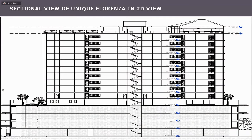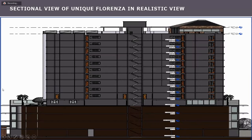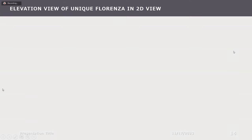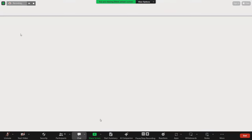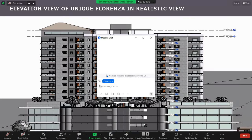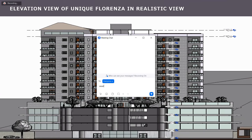Coming to the section view of Unique Florenza in 2D: I have cut the section from the staircase, and you can see the entire section plan. Then the same section is shown in a realistic view. Then we have the 2D elevation of Unique Florenza, followed by Unique Florenza in a realistic view.